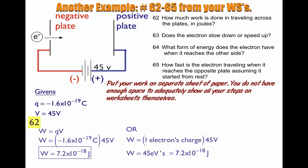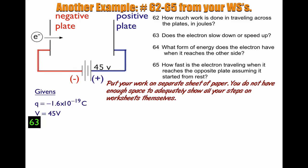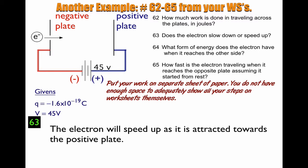Alright, so let's move on to number 63. Does the electron slow down or speed up? Well, the electron is negatively charged as it pops through the plates. The opposite plate is positive, because it is attached to the positive side of the battery. So the electron will be attracted towards the opposite plate because it's positive. Because it's attracted towards it, it's going to speed up as it goes across the plates.